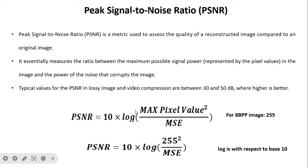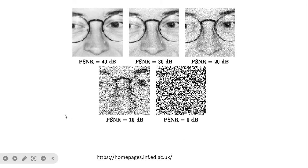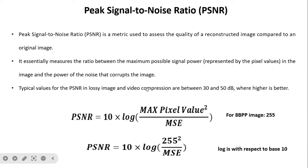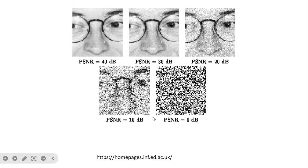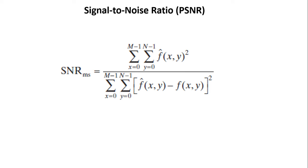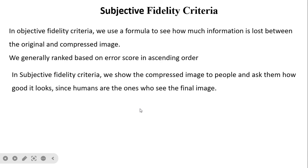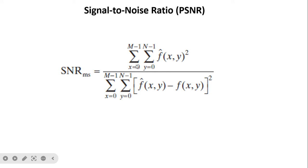The acceptable PSNR for image and video compression is between 30 and 40 dB, where higher is always better. A PSNR of 0 to 10 dB indicates the most compression but the worst quality, while 30 to 40 dB is the acceptable range. As PSNR decreases, image quality degrades. Signal-to-noise ratio (SNR) is similar to PSNR but uses the squared compressed image in the numerator divided by the squared difference between compressed and uncompressed image.